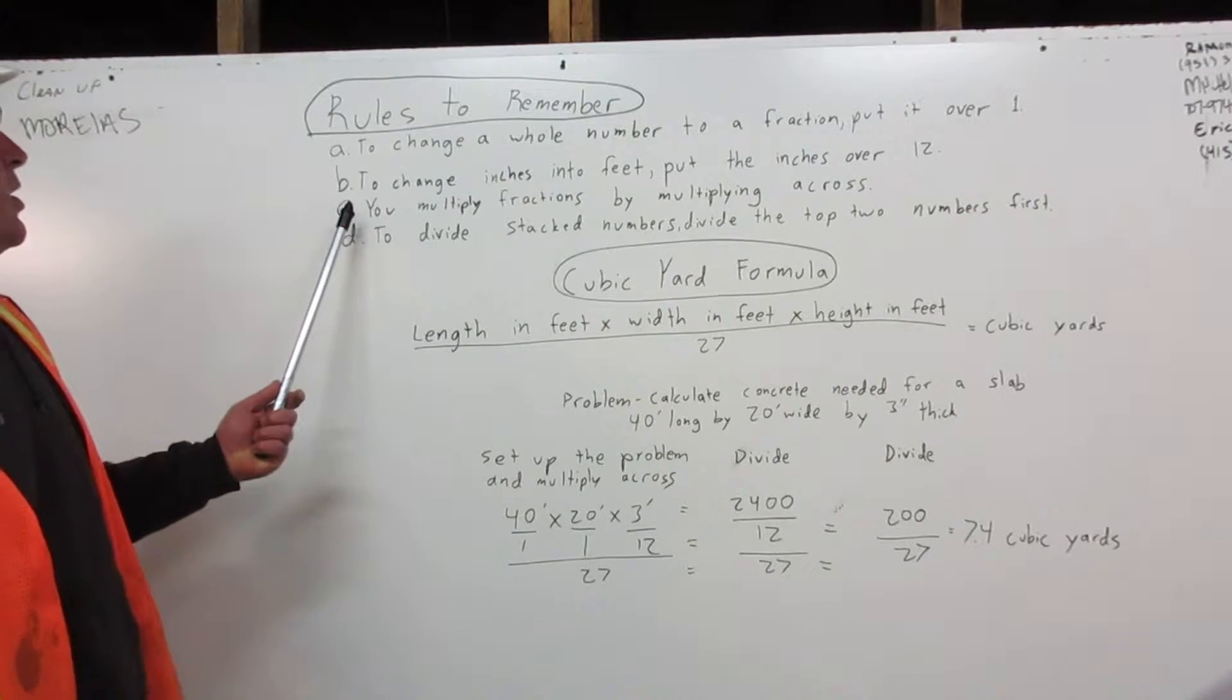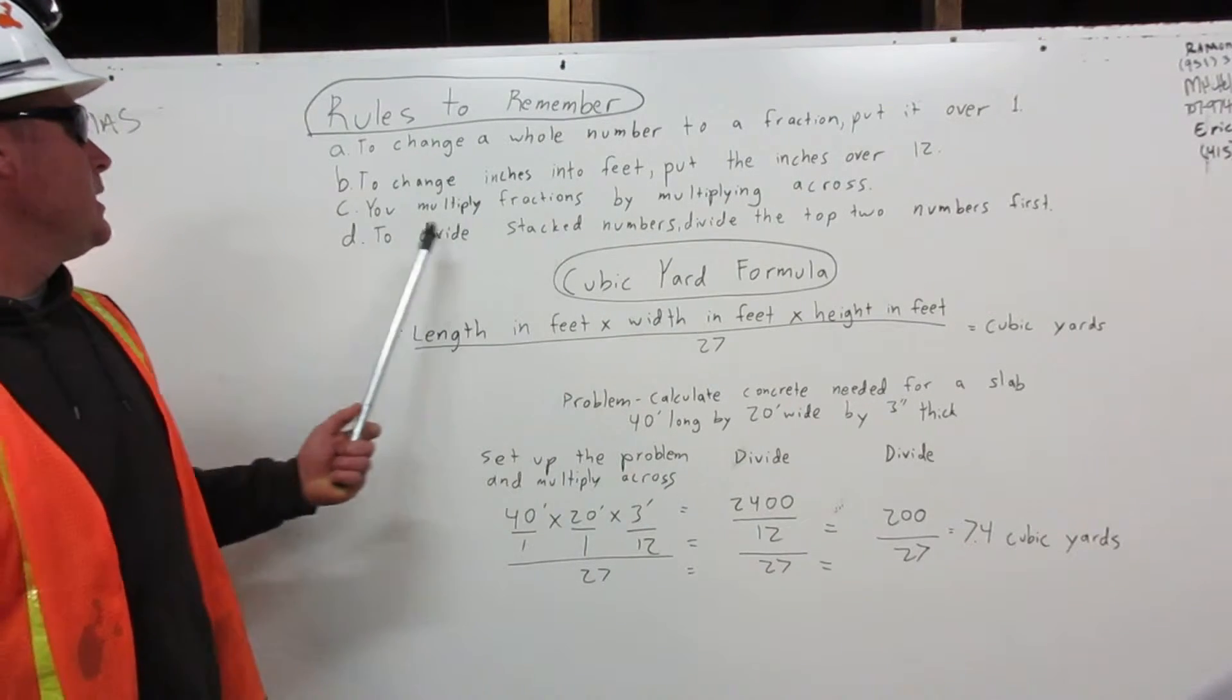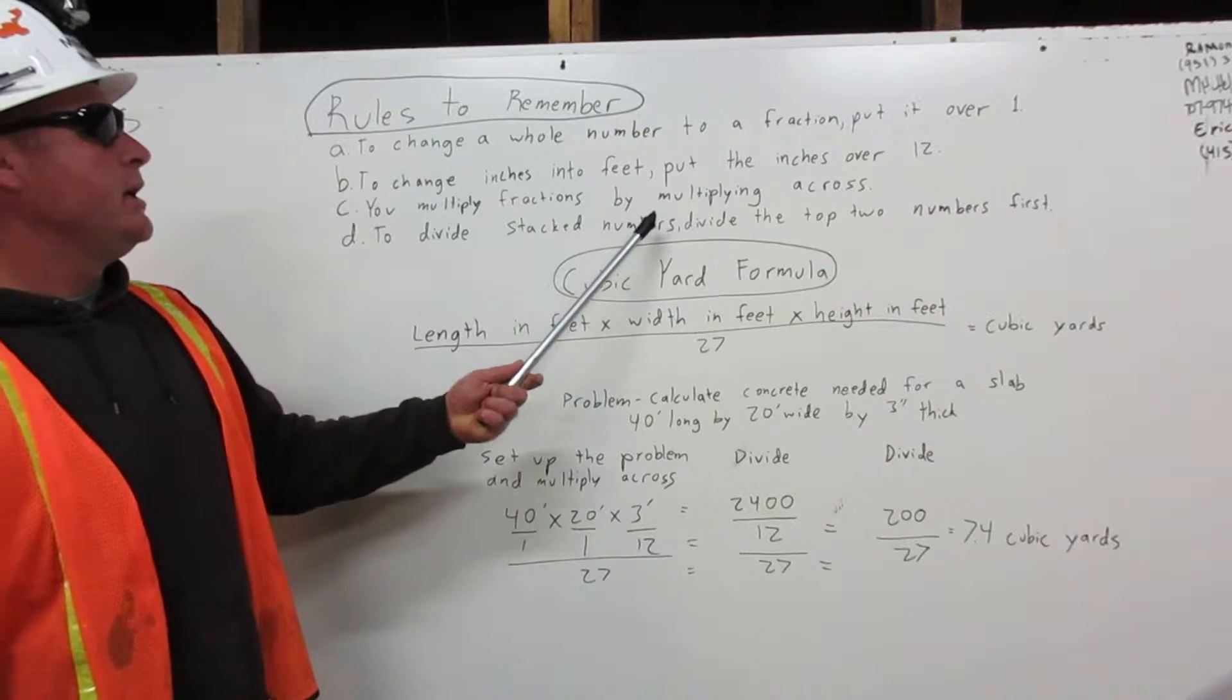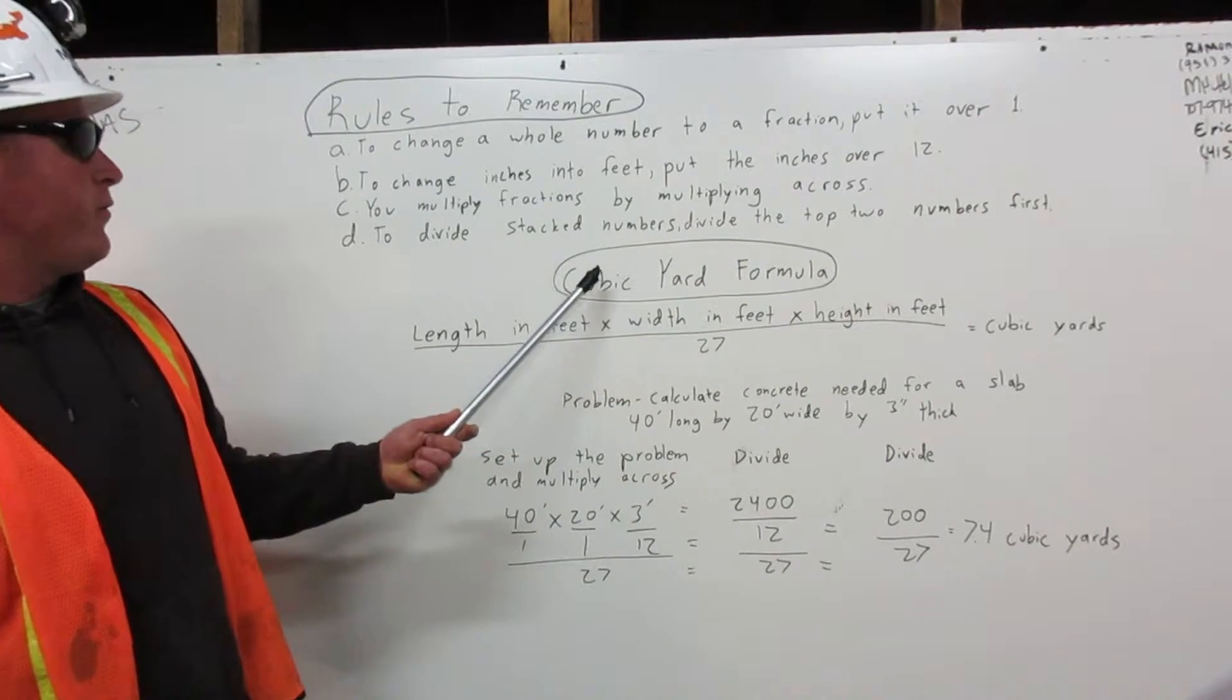C: You multiply fractions by multiplying across. D: To divide stacked numbers, divide the top two numbers first. Cubic yard formula.